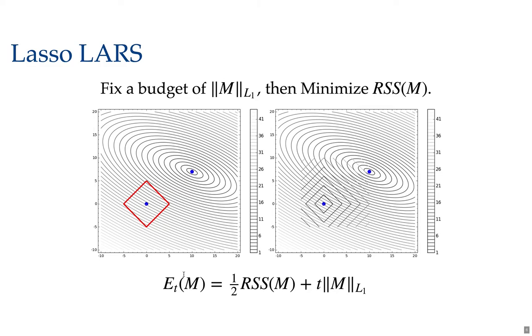And let's look at the joint function, the total energy, Et of m, which is one-half residual sum of squares plus t times the L1 norm.